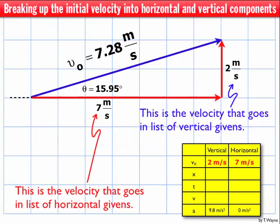And so now when I look at my table of givens, I can see that I have two values. I need one more value in the vertical column in order to solve questions with kinematics, and horizontally, I need one more given in the horizontal column as well in order to solve problems with kinematics.